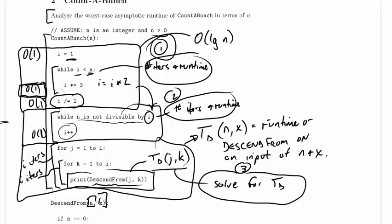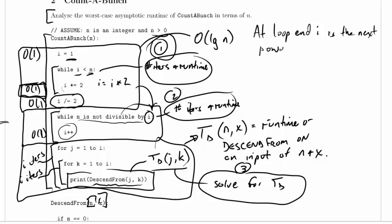So let's remind ourselves what i got to. At the end of the loop, at loop end, i is the next power of 2 greater than or equal to n.